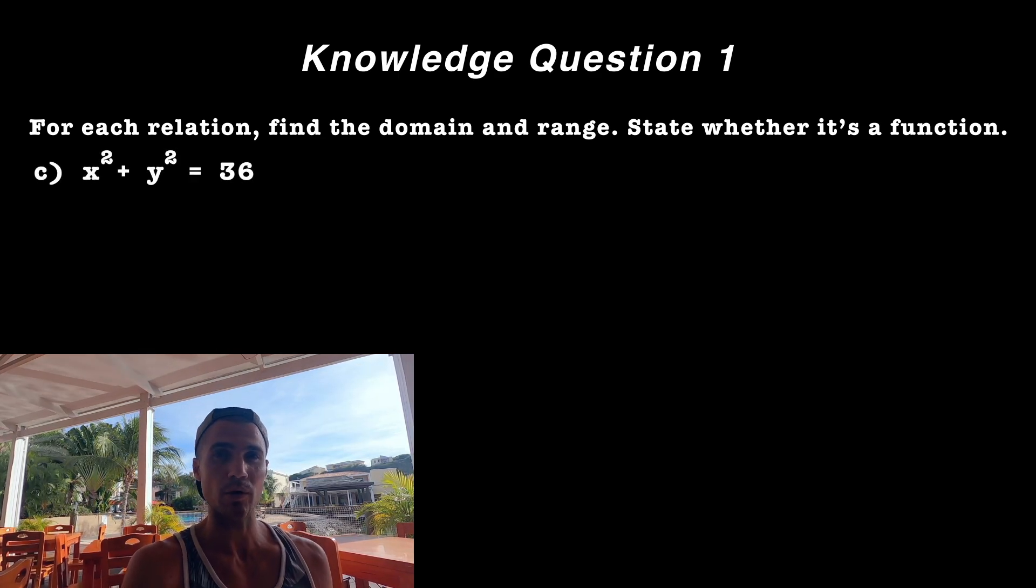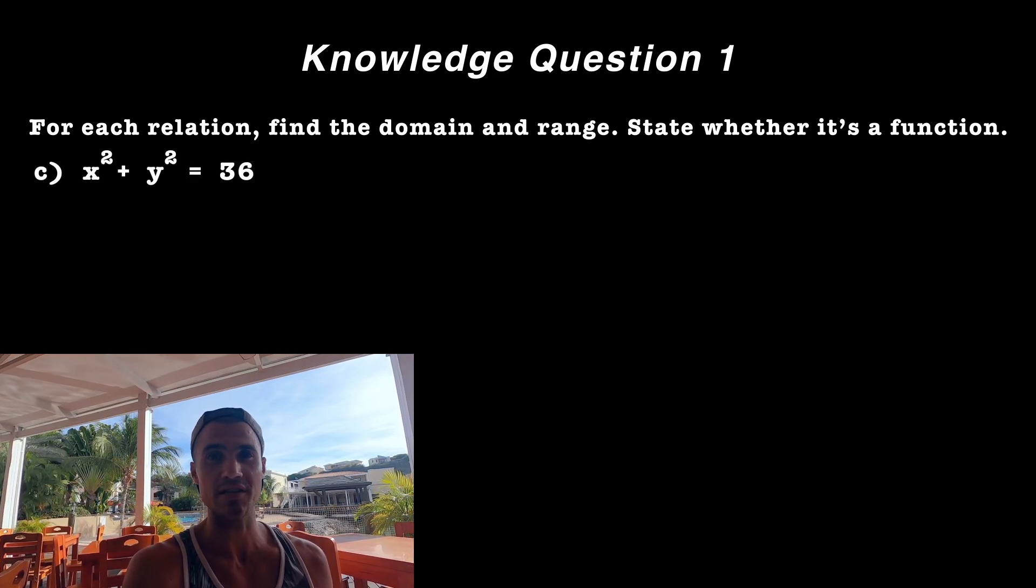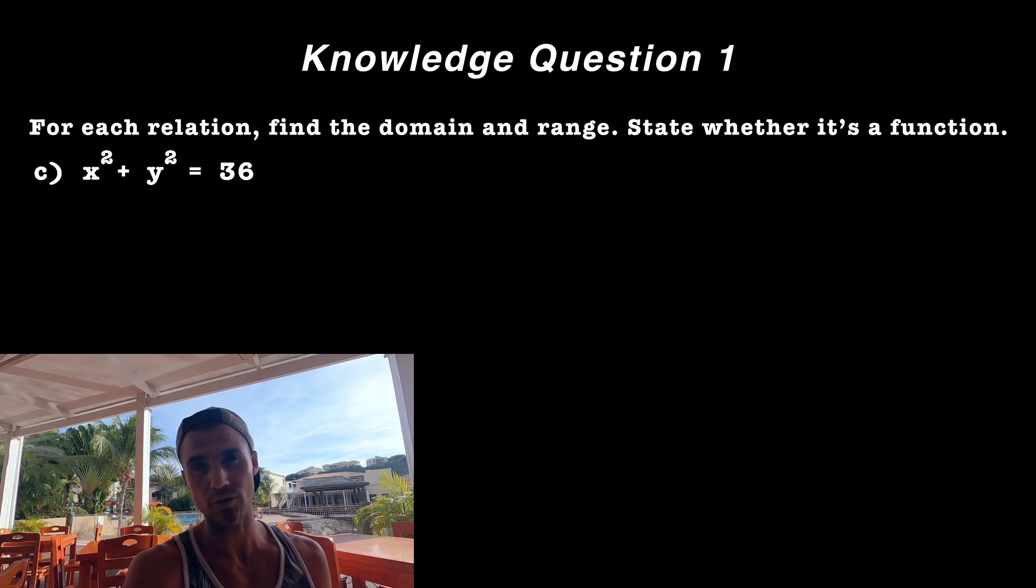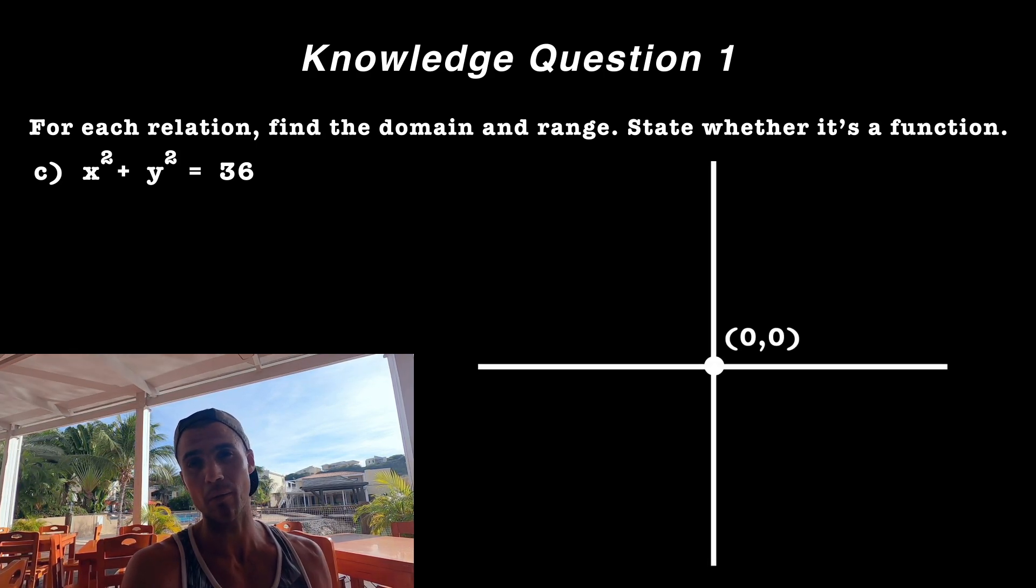Now moving on to part c, we got x squared plus y squared is equal to 36. And as you can tell, this is a standard circle that's going to be centered at zero and zero.